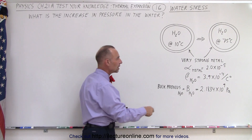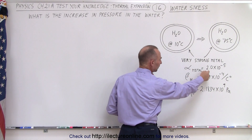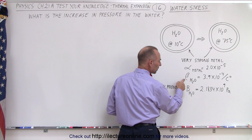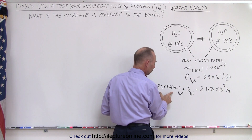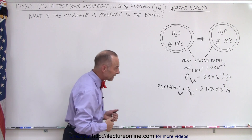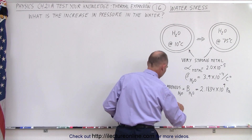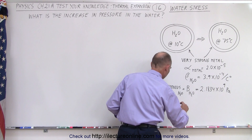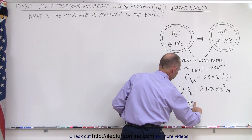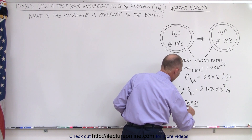We need to know the coefficient of linear heat expansion of the metal. We have the volume expansion of the water, and we have the bulk modulus of the water, which we need in order to calculate the stress. Remember that the modulus, by definition, is equal to the stress divided by the strain.